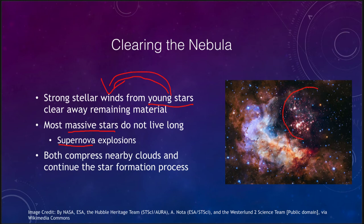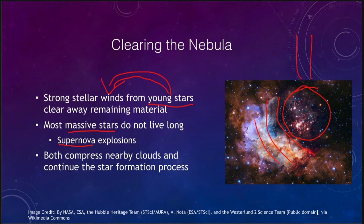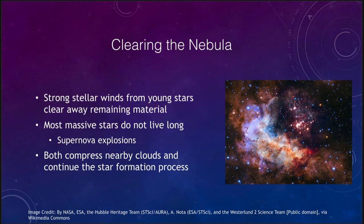We can see in an image a star cluster that is forming, and as its radiation pressure pushes out it pushes back against the nebula and the material left behind. That material gets compressed and more star formation continues. The shock waves from supernovae and compression from stellar winds will enhance star formation and continue the process. That will eventually clear it out, leaving behind just a cluster of stars.